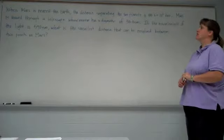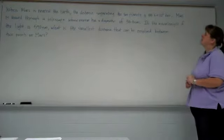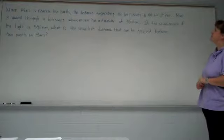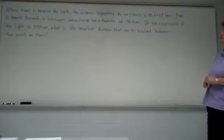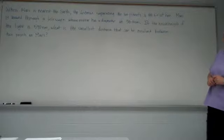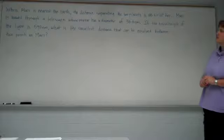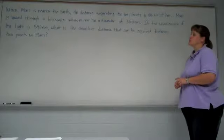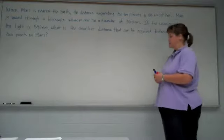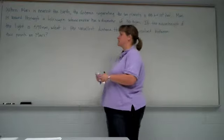When Mars is nearest the Earth, the distance separating the two planets is 88.6 times 10 to the 6 kilometers. Mars is viewed through a telescope whose mirror has a diameter of 30 centimeters. If the wavelength of the light is 590 nanometers, what is the smallest distance that can be resolved between two points on Mars?